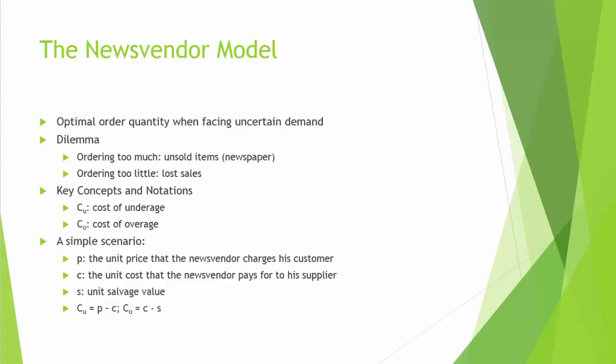It is also reasonable to assume that the supplier can satisfy whatever quantity you order. The demand for the newspaper is uncertain; we assume it follows a normal distribution with mean mu and standard deviation sigma. The publisher charges you C dollars for every copy, whereas you charge your customer P dollars per copy. Of course, P is greater than C, otherwise you would lose money for every copy you sell.